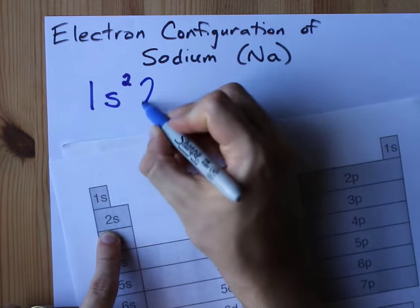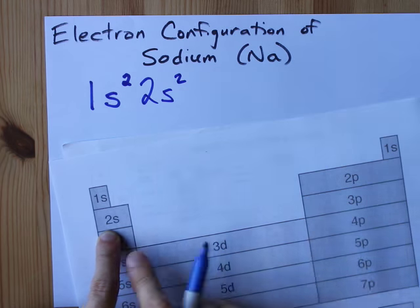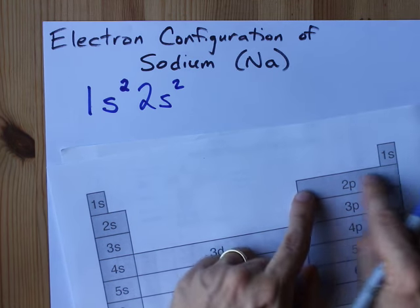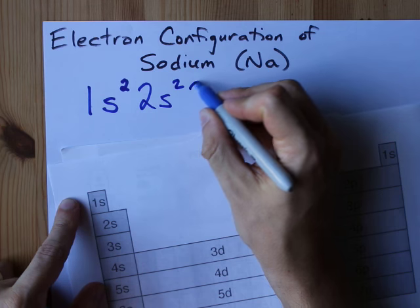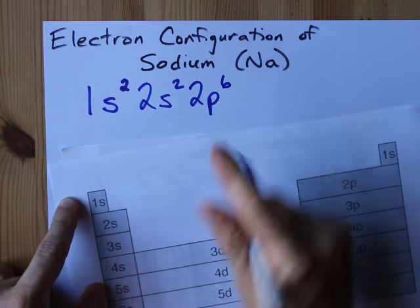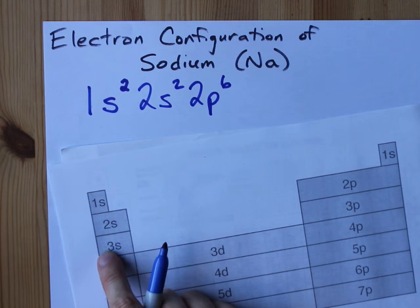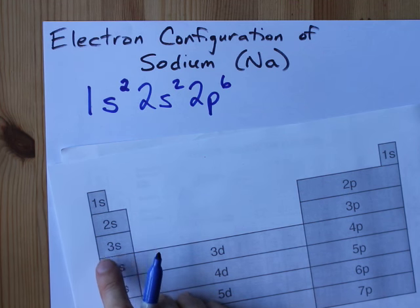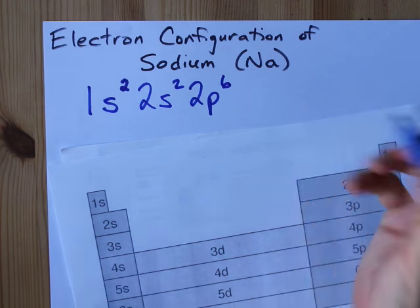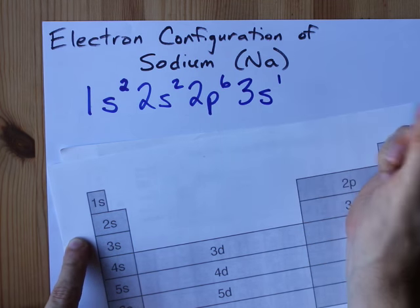Next, we have 2s, and we fill that with two electrons, 2p, and we fill all six of those electrons in there, 3s is where we eventually stop. Na is the first element in this 3s block. So to get to Na, or sodium, we only need a single electron.